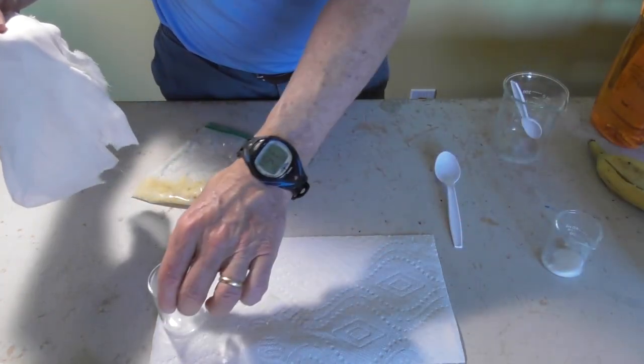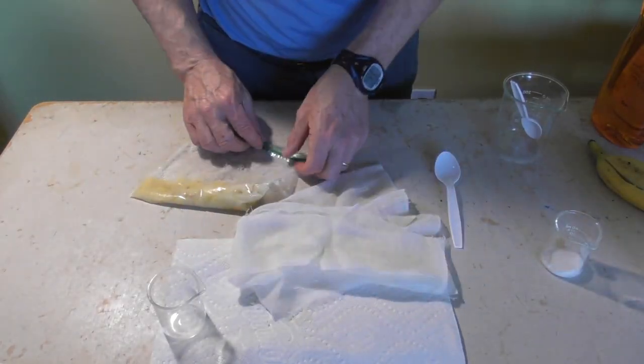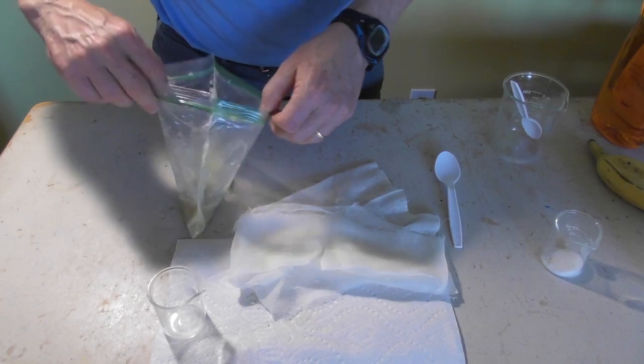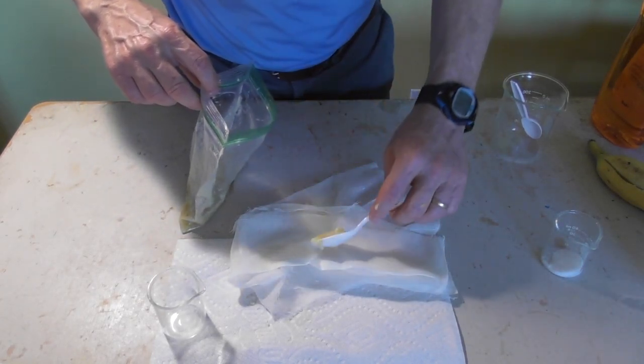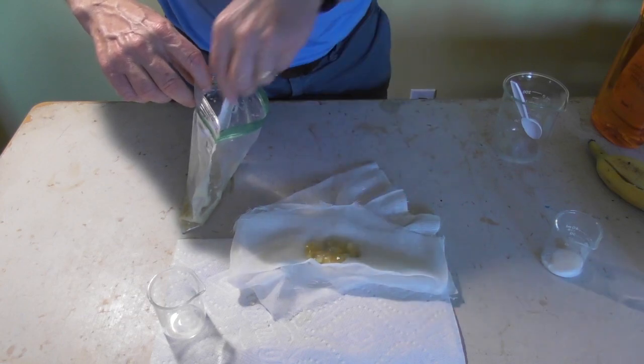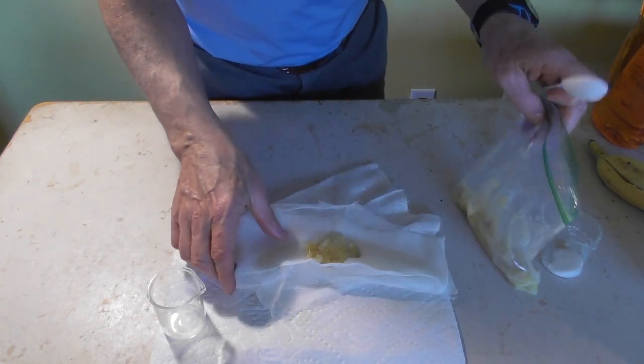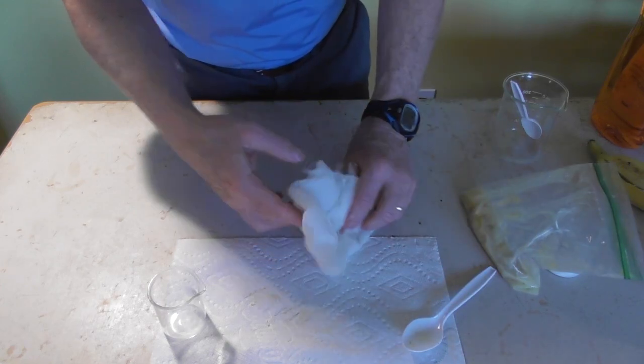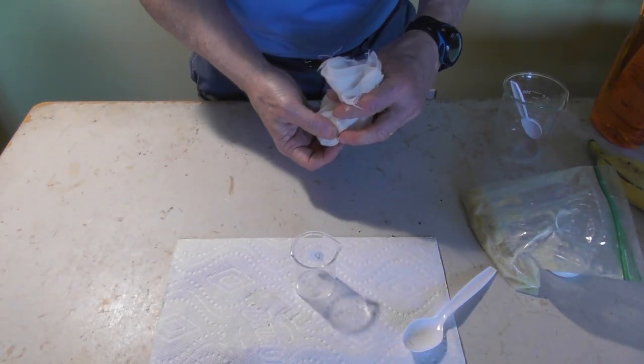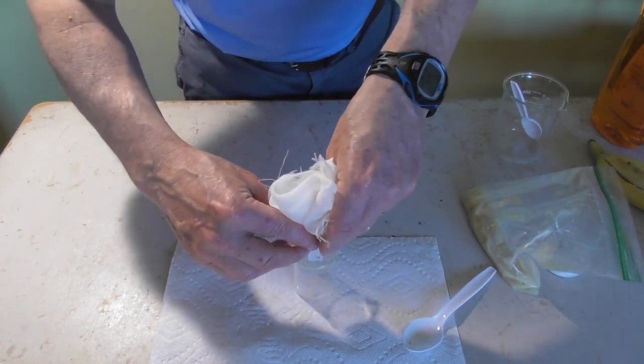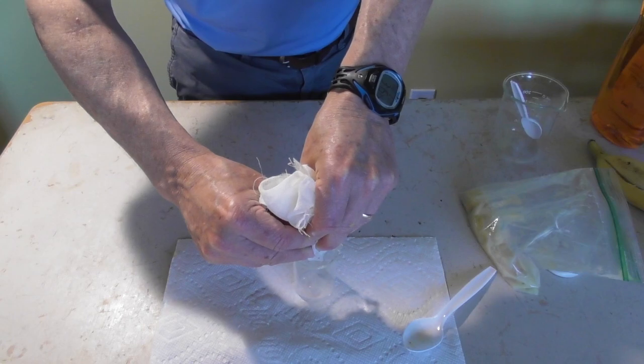And what you do is you basically get a little square of it. Next you get a scoop of the baby food mixture. And then wrap it up and you can use a baby food jar if you don't have a beaker like this or any small jar and then you squeeze it to where liquid comes out.